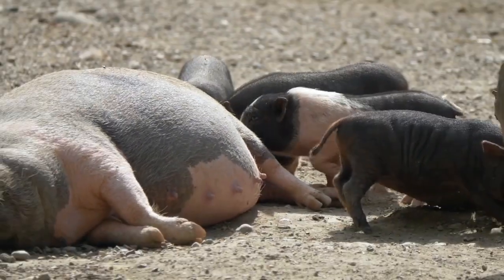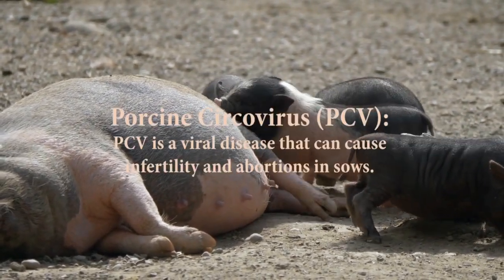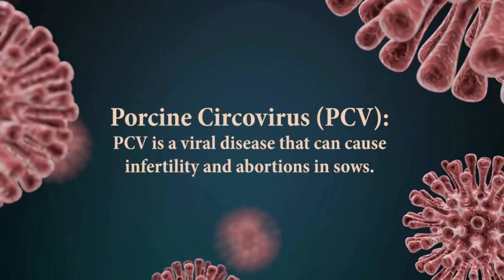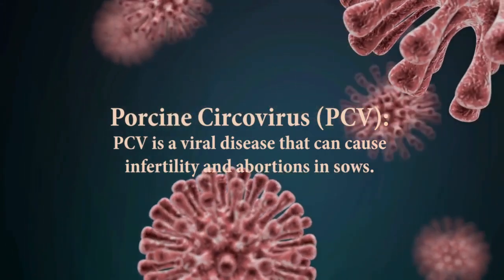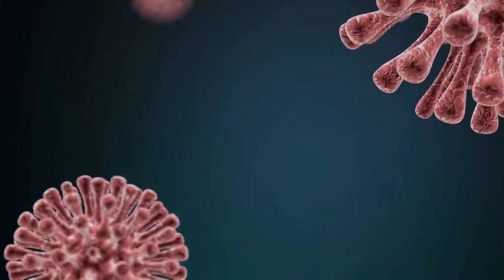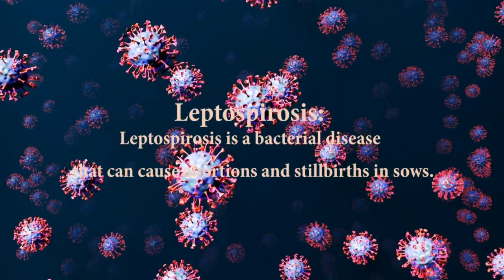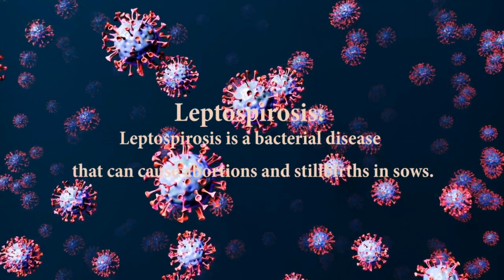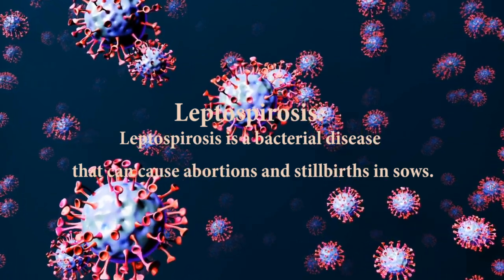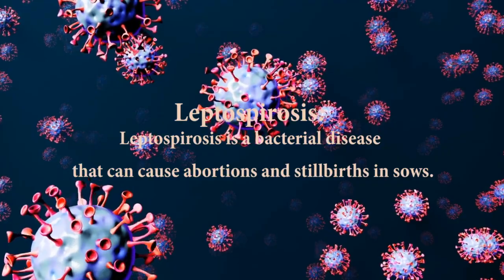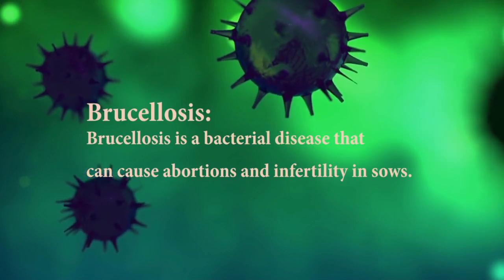The PRRS virus can also cause infertility in non-pregnant sows by affecting the quality and quantity of eggs. Porcine circovirus, or PCV, is a viral disease that can cause infertility and abortion in sows. The virus can also affect the immune system, making sows more susceptible to other diseases. Leptospirosis is a bacterial disease that can cause abortion and infertility in sows.